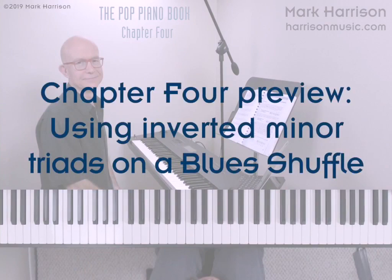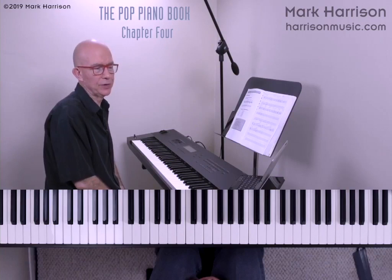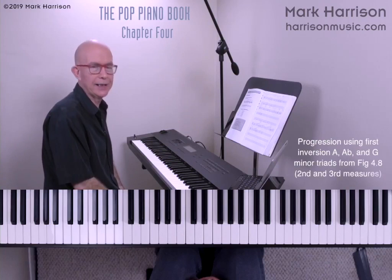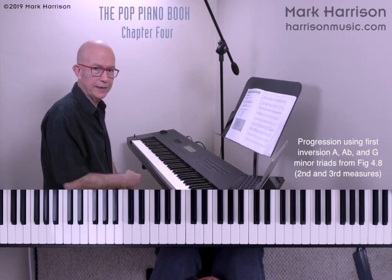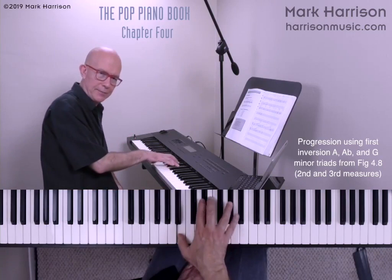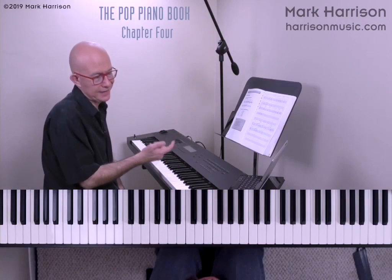Next we'll use some inverted minor triads when playing a blues shuffle groove. I'm going to improvise a style example using first and second inversion minor triads. First I'll use A minor, A flat minor, and G minor triads in first inversion from figure 4.8 — they're found in the second and third measures. So we'd have A minor first inversion, A flat minor first inversion, then G minor first inversion.